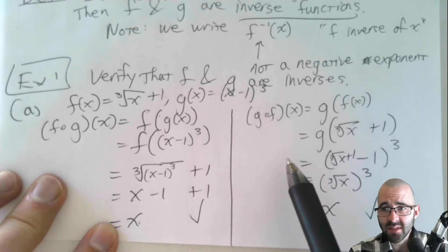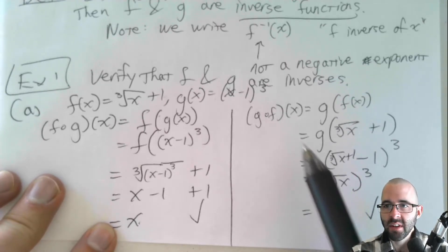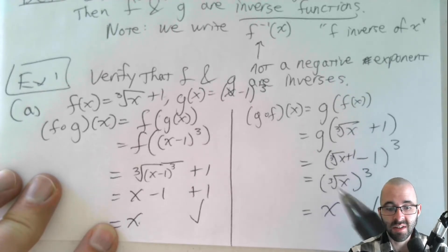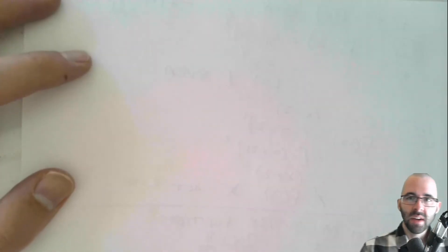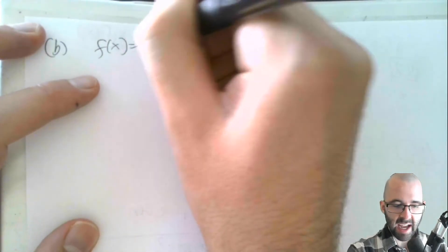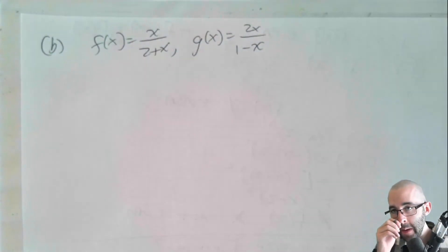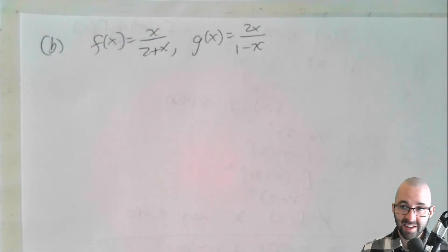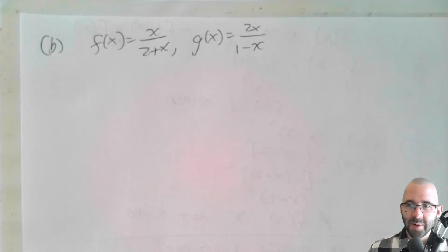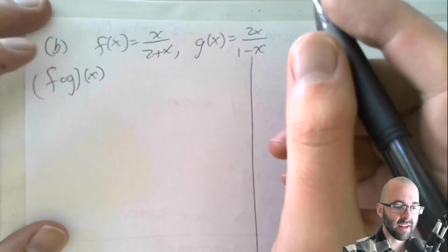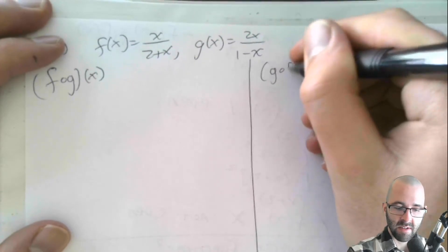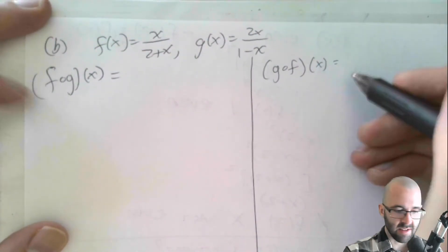The hardest stuff in this video is not the new 3.7 concept — it's function composition, algebra, and simplification, so watch out for those. Part b: f(x) = x/(2+x) and g(x) = 2x/(1−x). This one is trickier. We have to check two things: what is f(g(x)) — hopefully cancels to x — and g(f(x)) as well. Those are the two things we need to verify.